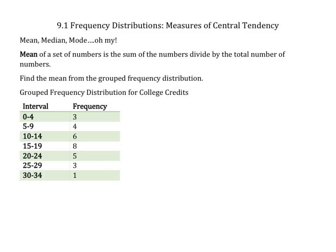These are the grouped frequency distribution for college credit. This one might be a little bit more difficult than what you've maybe seen before. First, you want to find the midpoint between each interval. So the midpoints here would be 2, 7, 12, 17, 22, 27, and 32.